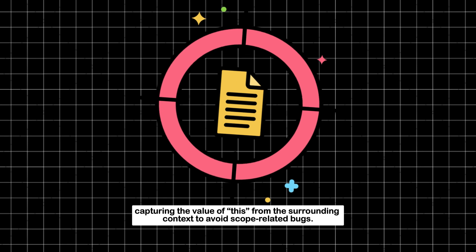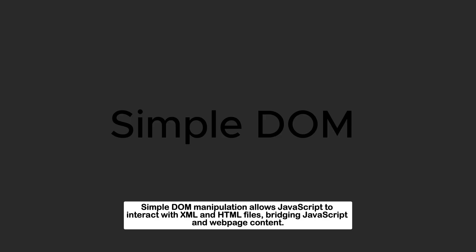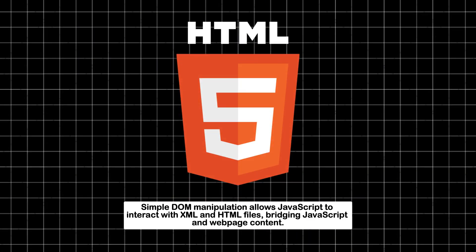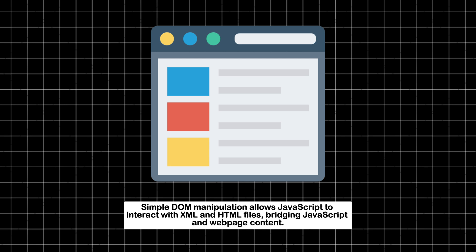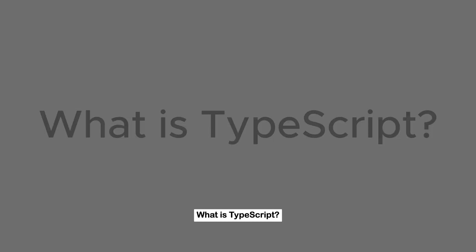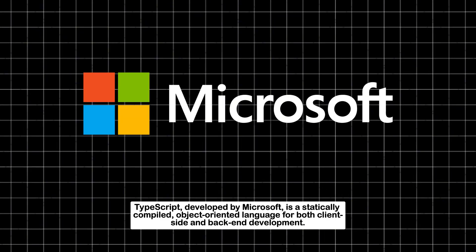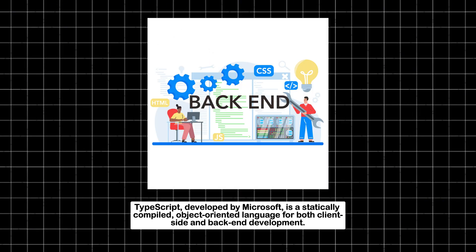Simple DOM manipulation allows JavaScript to interact with XML and HTML files, bridging JavaScript and web page content. This enables the addition of dynamic and interactive functions to web pages. TypeScript, developed by Microsoft, is a statically compiled, object-oriented language for both client-side and backend development.